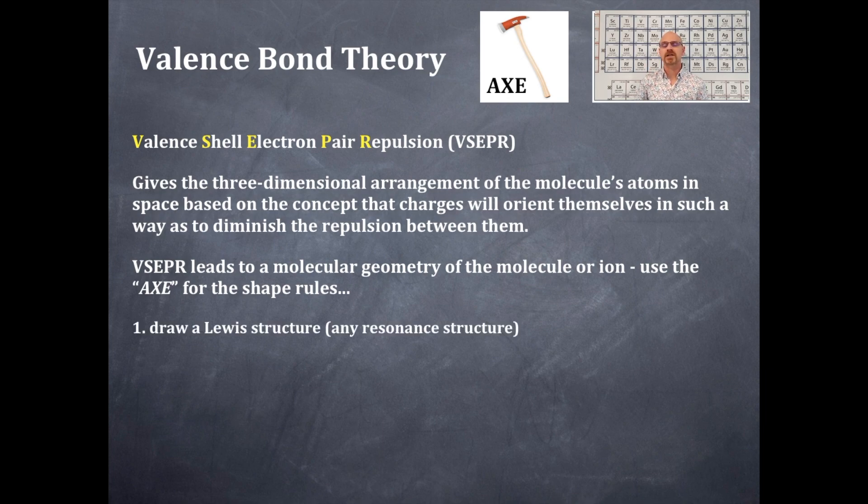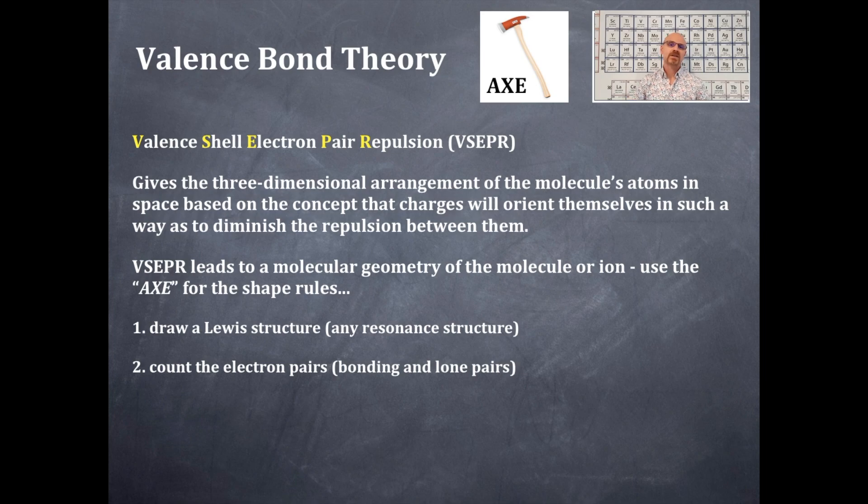Number one, you're going to first draw the Lewis dot structure, any resonance structure will do. If you don't know what a resonance structure is, stay tuned, we're going to be talking about that later. Number two, you're going to count up the electron pairs, the domains around the central element, that is, the bonding and the lone pairs.